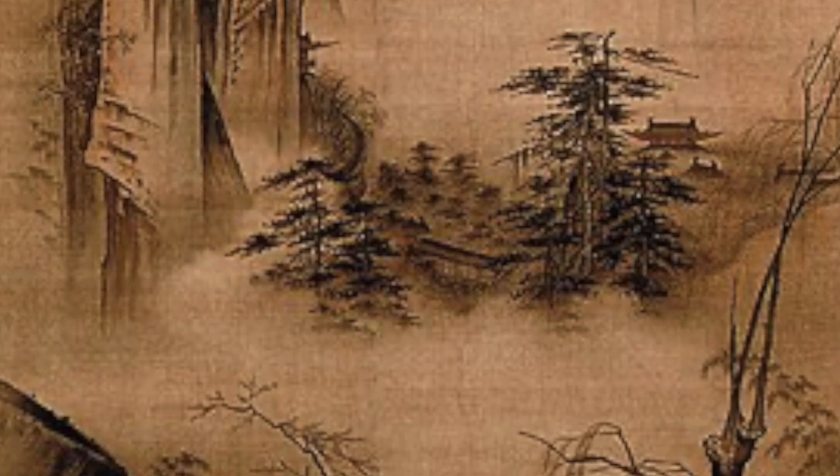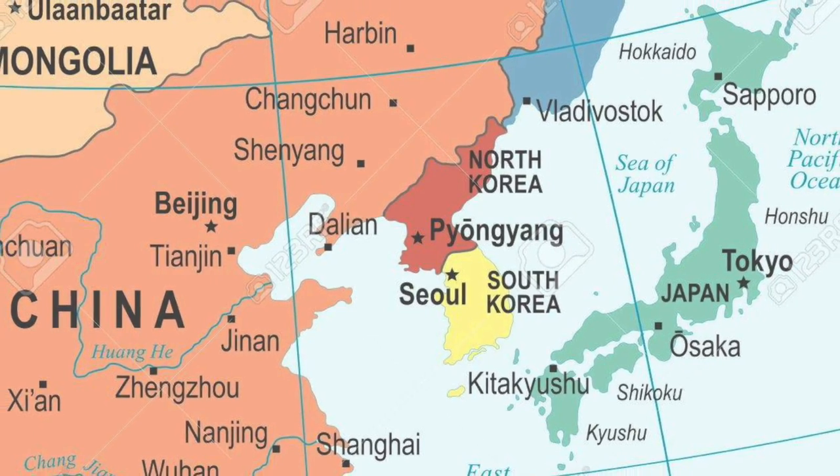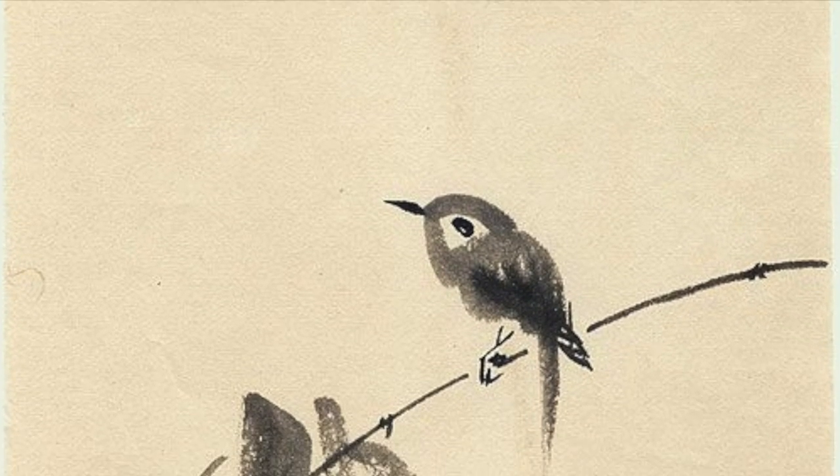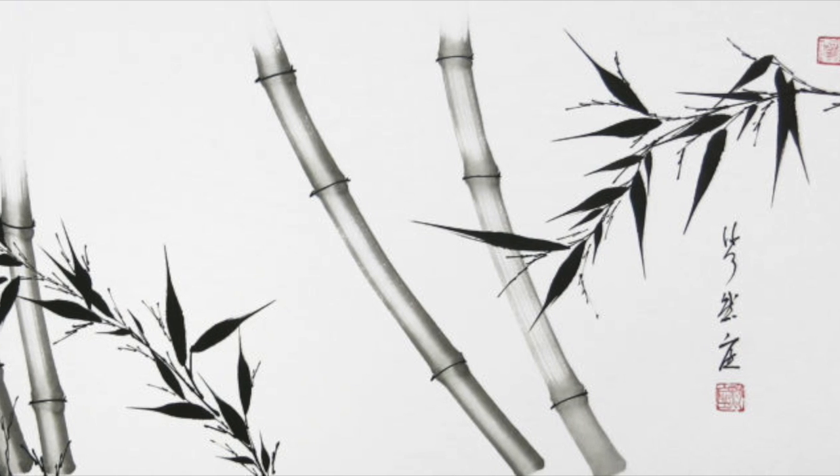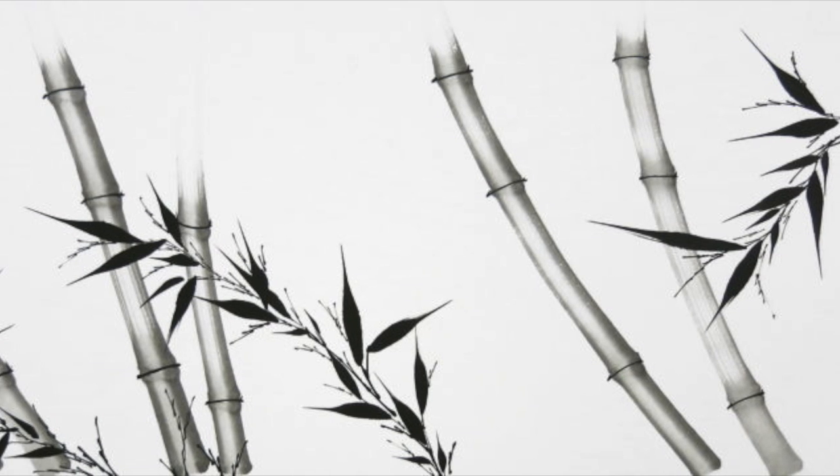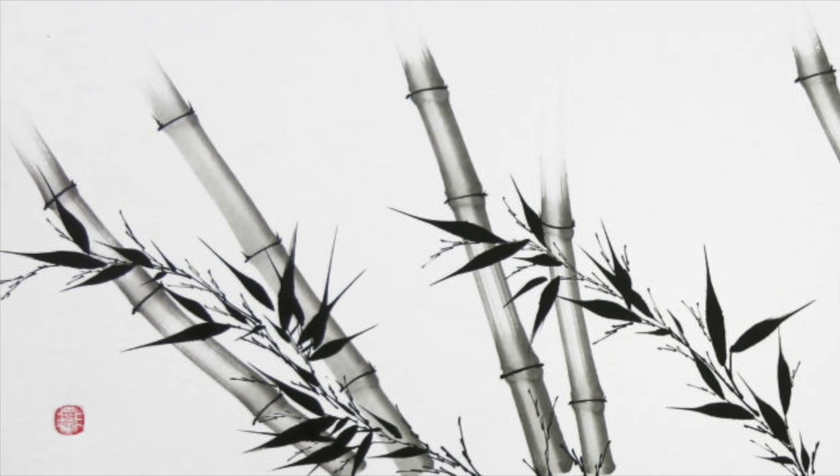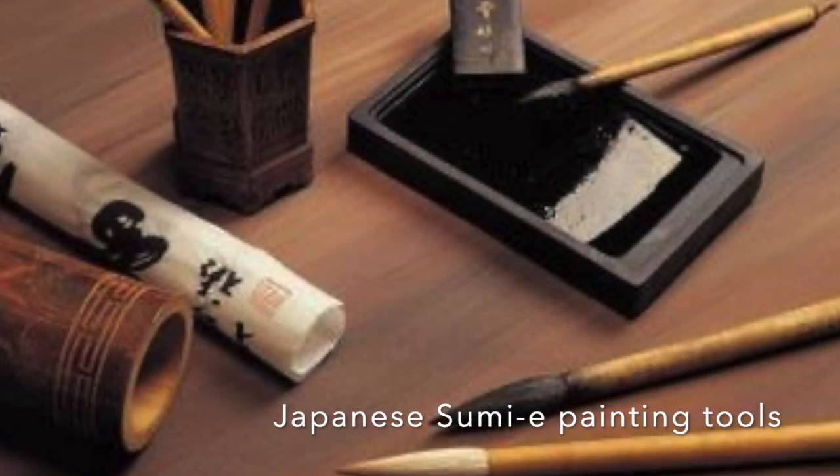Japanese sumi-e painting is a form of ink wash painting. It was first developed in China and spread to Japan and Korea by Buddhist monks. The goal of sumi-e painting isn't just to create a picture of the subject, but to capture the spirit of the subject as well. Because of this, every brushstroke has beauty and meaning. The act of creating a sumi-e painting is full of traditions and rituals and is considered one of the highest art forms in Japan.